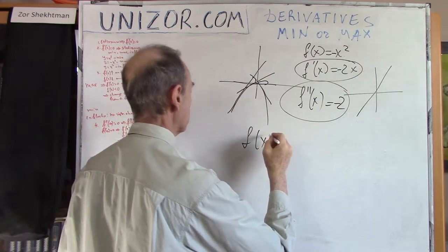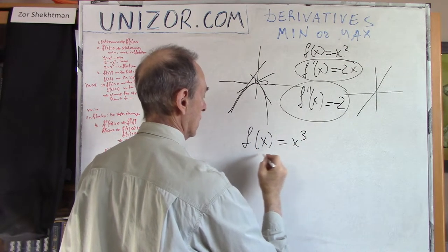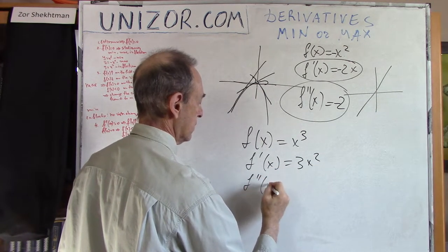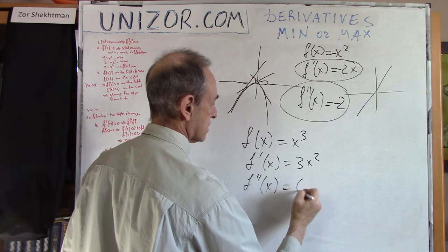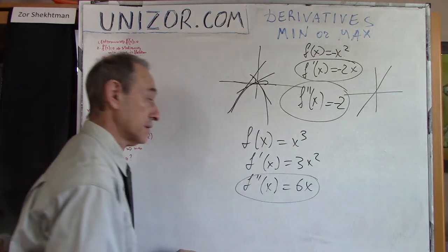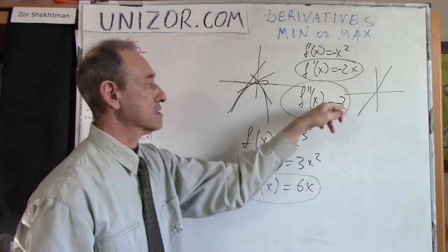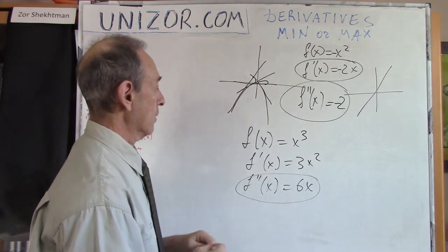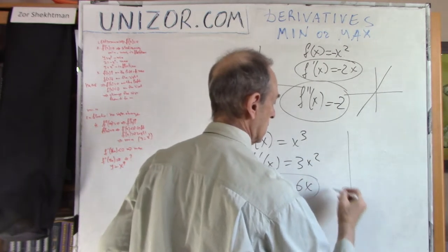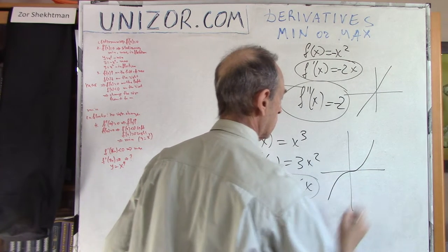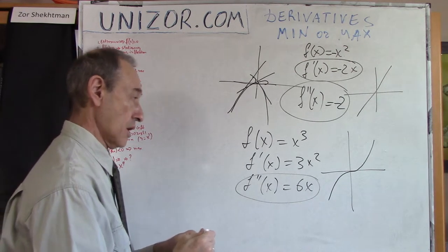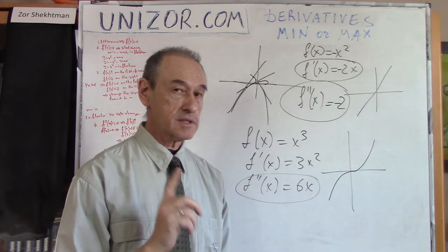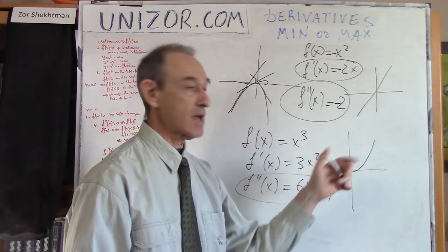What about the inflection point? For f(x) = x³, the first derivative is 3x² and the second derivative is 6x. At x = 0, the second derivative equals zero — neither positive nor negative — so we cannot apply the second derivative rule here. And indeed the function has an inflection point at x = 0, confirming we have neither a minimum nor a maximum.